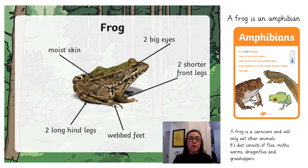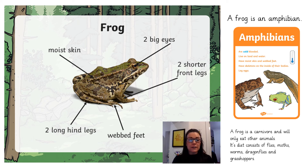On this slide you will see a frog. Frogs have two hind legs, webbed feet, two shorter front legs, two big bulgy eyes and moist skin. Frogs are amphibians. They live on land and water and they also lay eggs. Frogs eat flies, moths, dragonflies, grasshoppers and worms. This makes them carnivores.